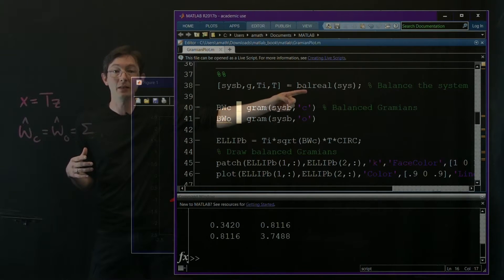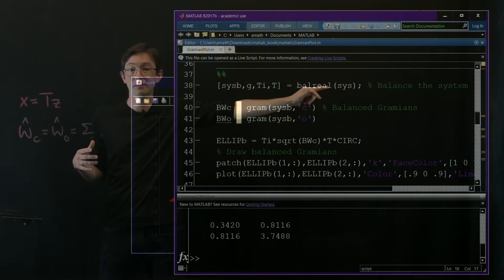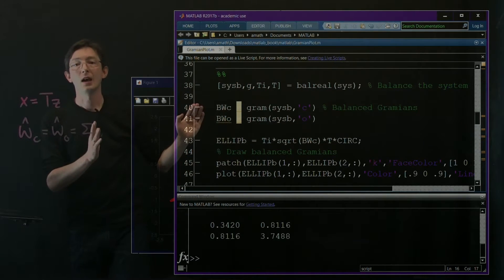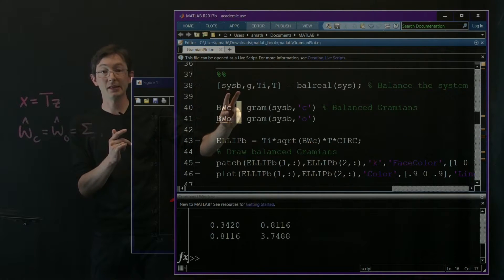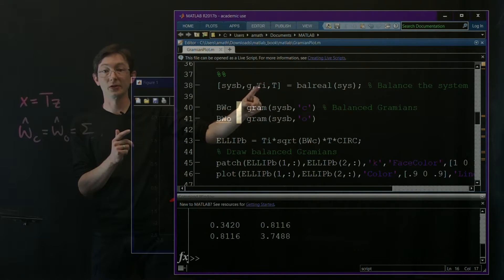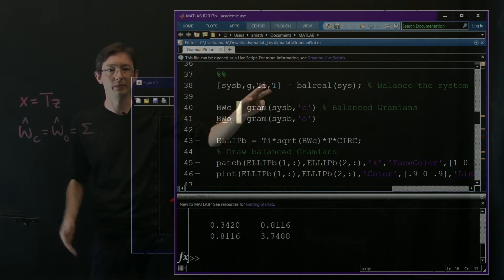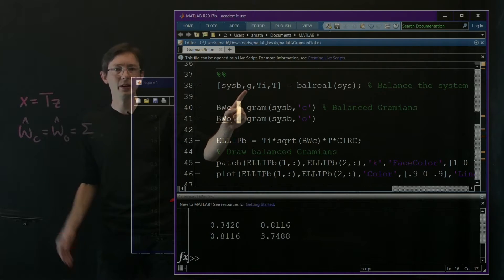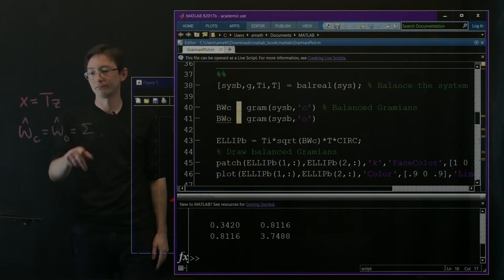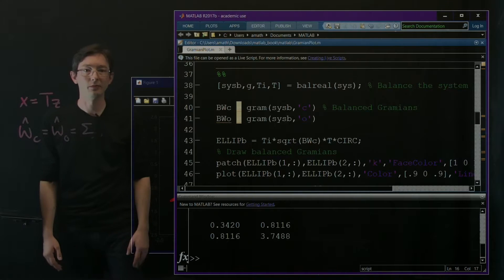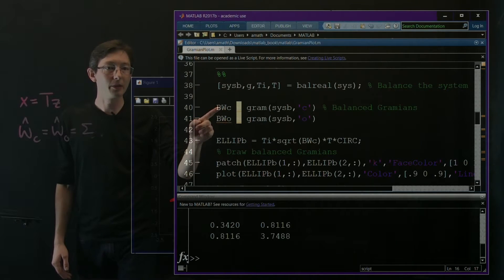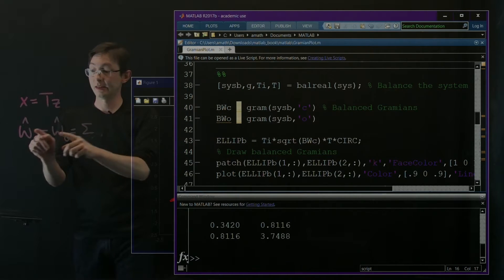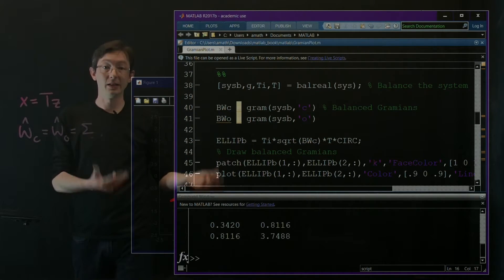So what we're going to do is we're going to find a balanced realization of our system. This is a built-in MATLAB command balrel, balanced realization. And what it gives me is the balanced system and then these transformations T and the inverse transformation S is what I called it before. They call it T inverse. And I can't remember what G is, but if I was doing this, I'd give my diagonal elements of sigma probably. And then all I'm going to do is I'm going to look at what the Gramians of this balance system are, because in these balanced coordinates, these Gramians should be equal and diagonal.